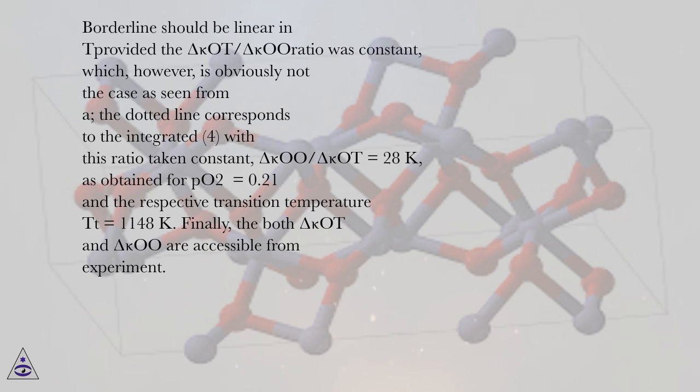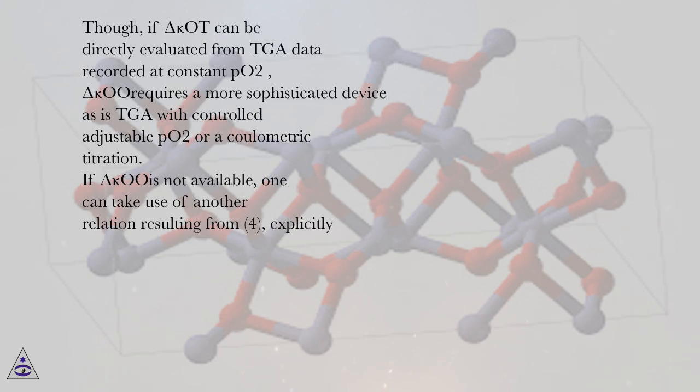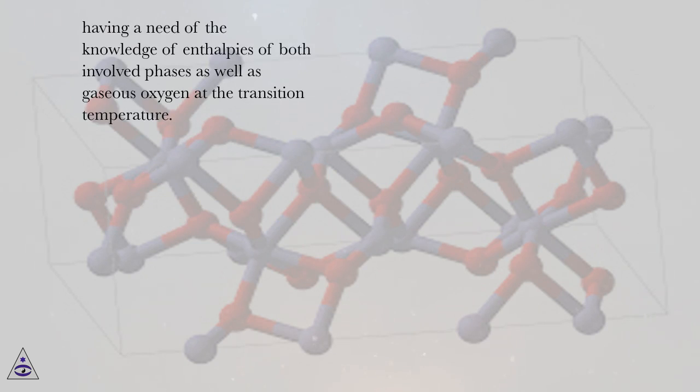Finally, both Δκₒ values are accessible from experiment. Though Δκₒ can be directly evaluated from TGA data recorded at constant PO₂, the other Δκₒ requires a more sophisticated device such as TGA with controlled adjustable PO₂ or coulometric titration. If Δκₒ is not available, one can use another relation resulting from equation 4 explicitly, requiring knowledge of enthalpies of both involved phases as well as gaseous oxygen at the transition temperature.